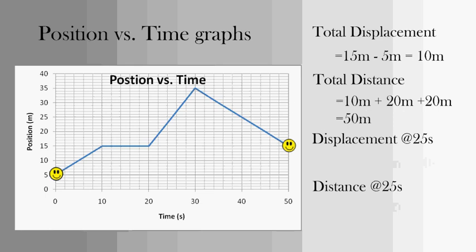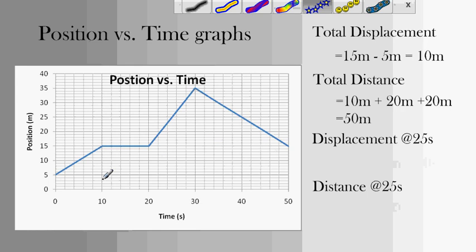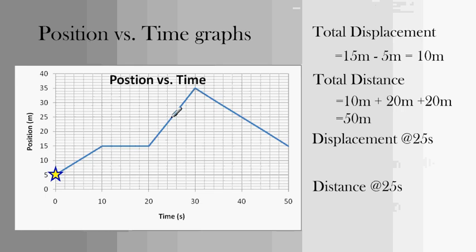Sometimes, you'll be asked to find the displacement for the first couple seconds. So, the displacement after 25 seconds, we would start at zero, and we would look at 25 seconds, which is right here. So, that would be 25 minus 5. The displacement would be 20 meters. To find the distance there, from 5 to 15 is 10, and then from 15 to 25 is another 10. So, 10 plus 10 is 20 meters for displacement.